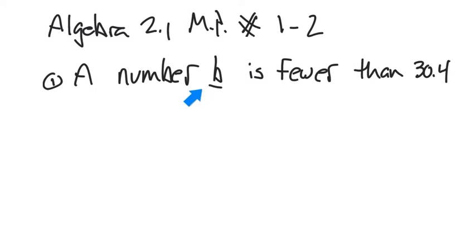So here, a number B - so B, whatever B is - B is fewer, which is like less, same thing as less, less than 30.4. 30.4 over here.